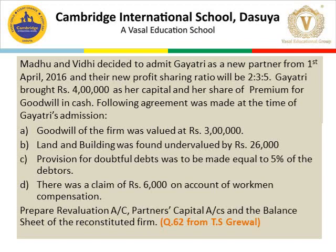Gayathri brought Rs. 4 lakh as her capital and her share of premium for goodwill in cash. The following agreement was made: (A) goodwill of the firm was valued at Rs. 3 lakh; (B) land and building was found undervalued by Rs. 26,000; (C) provision for doubtful debts was to be made equal to 5% of debtors; (D) there was a claim of Rs. 6,000 on account of workman compensation. Prepare revaluation account, partners' capital accounts, and the balance sheet of the reconstituted firm.